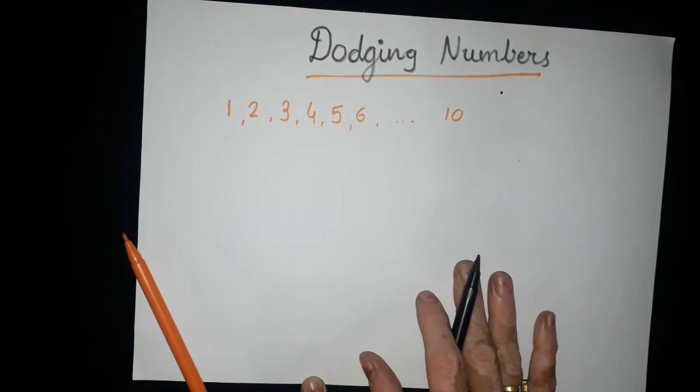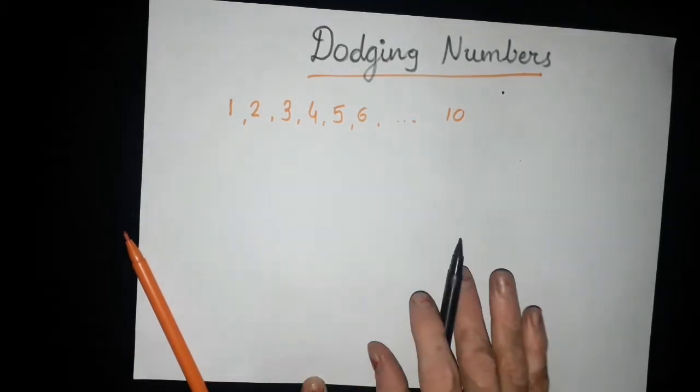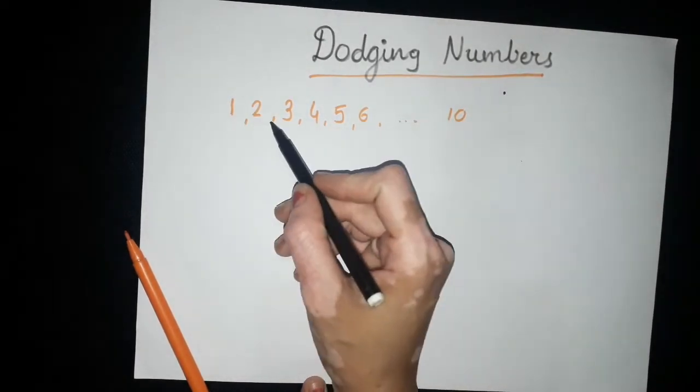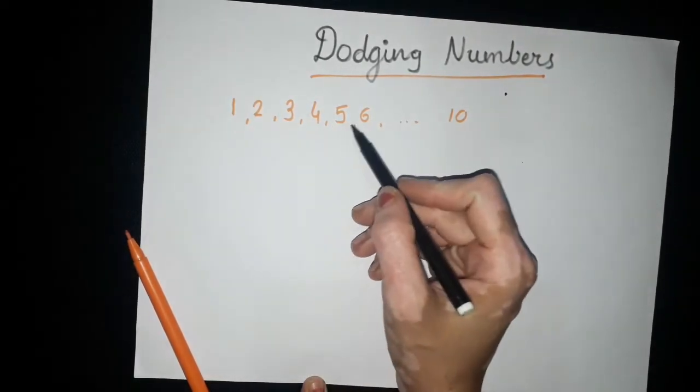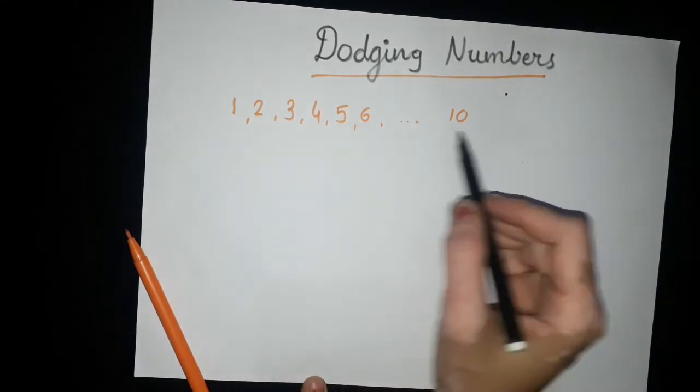First, let's look at regular number sequence: one, two, three, four, five, six. This is a sequence of numbers, or counting.